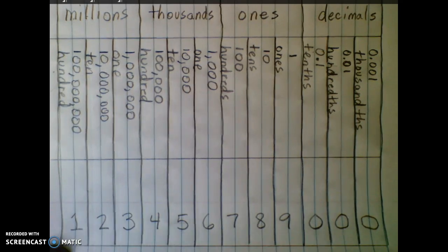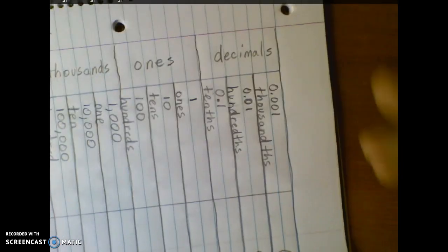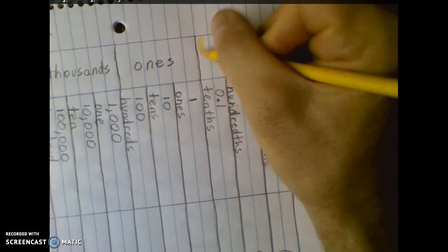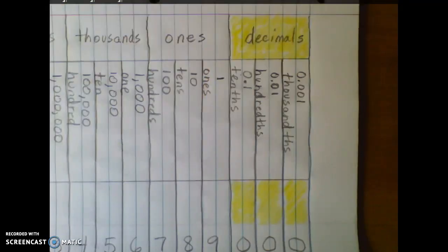And then we're going to add some color to distinguish our periods. I'm going to start with yellow for my decimals. Here you can see I've colored above and below yellow. I'm going to use green for my ones place.